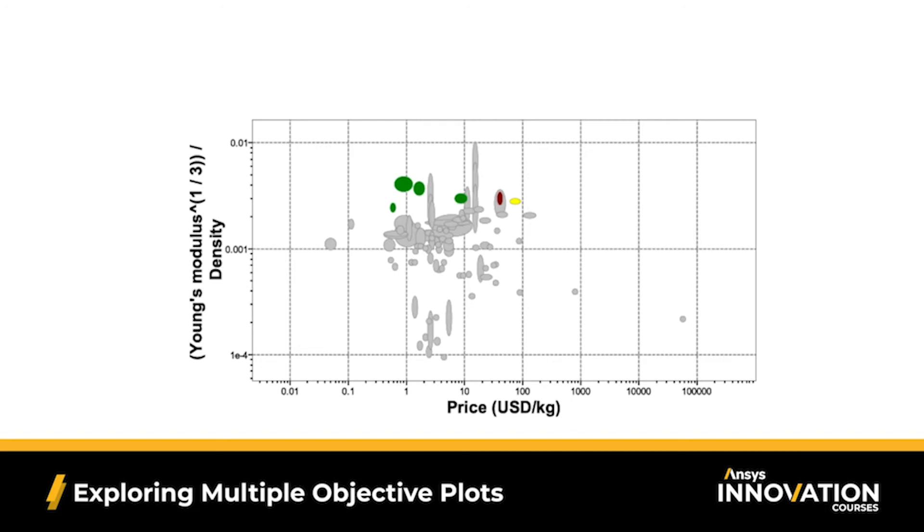Our candidate materials have scattered values of our performance indices. For example, we find bad mass performance but good cost performance in the upper left-hand corner. Conversely, there are materials that have good mass performance, but they're very expensive for what they deliver, so bad cost performance in the lower right-hand corner.